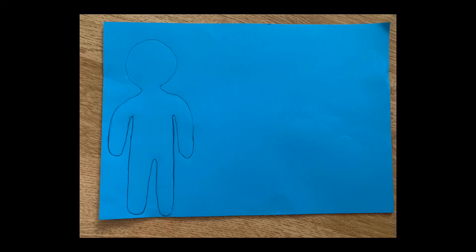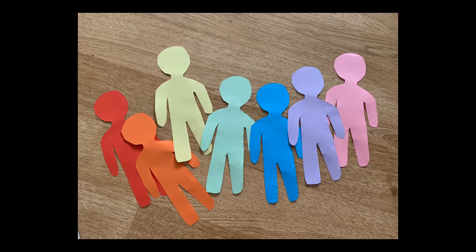On the pieces of paper draw the outline of a person like this. Then cut out each of the people. You need seven little people shapes.